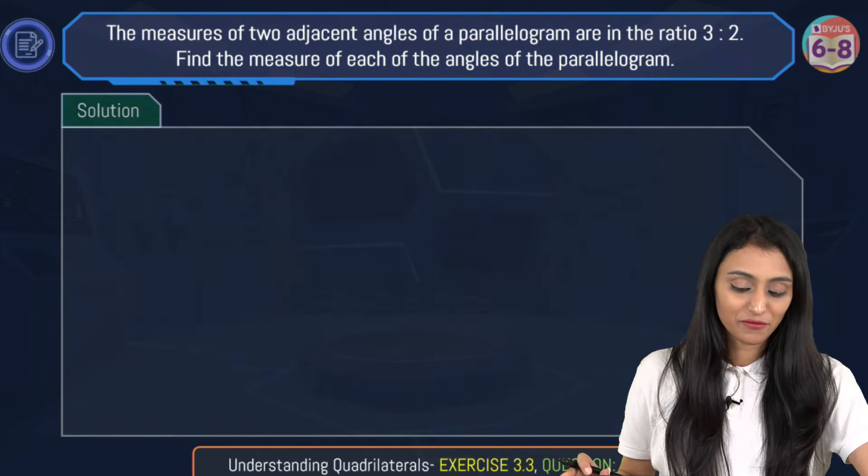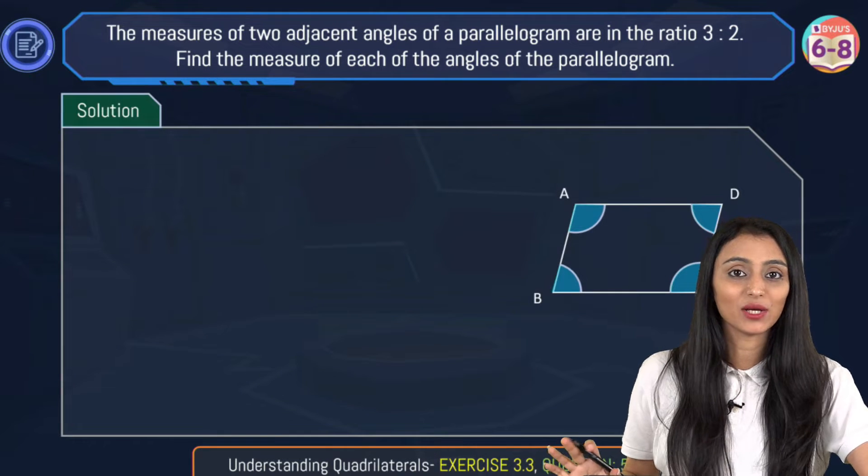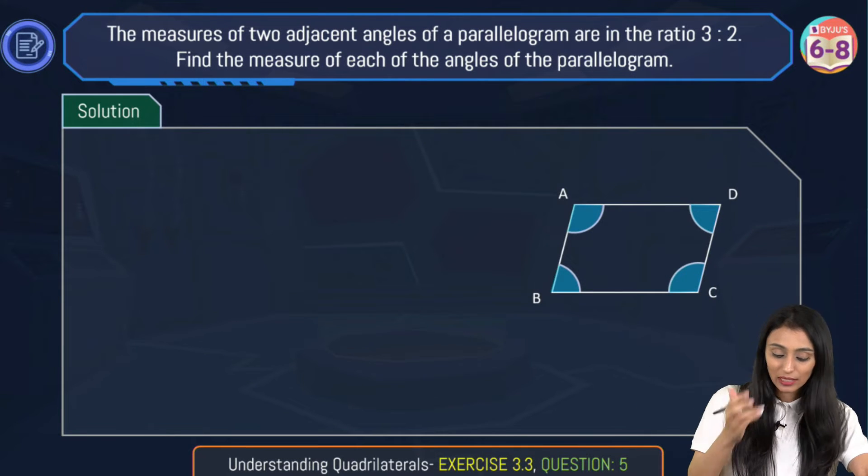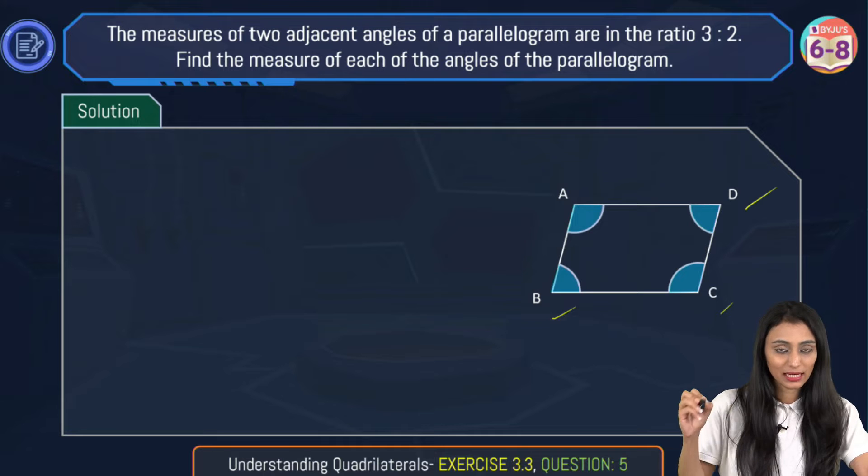So let's make a parallelogram first. Here we have this parallelogram ABCD. Angle A, angle B, these are the four angles that we have marked here.